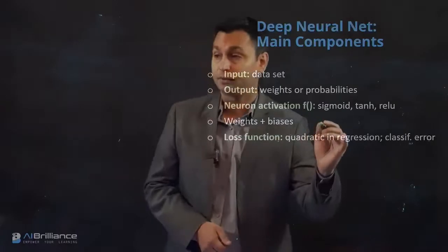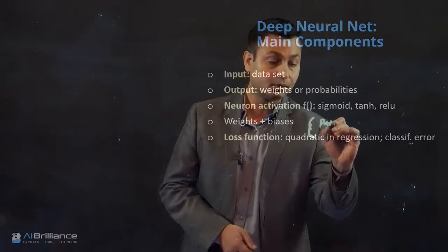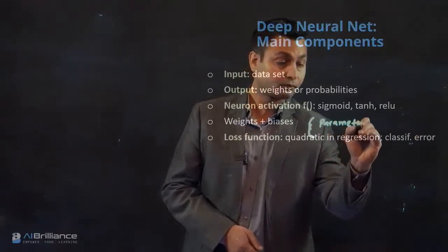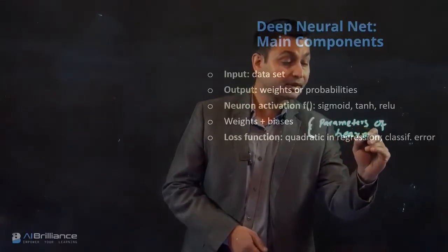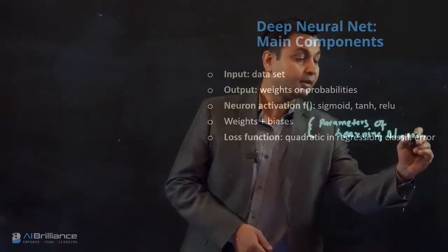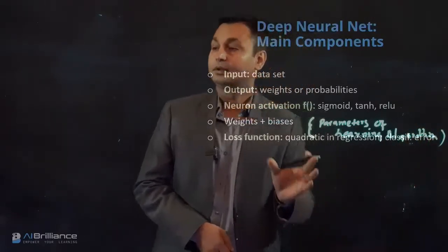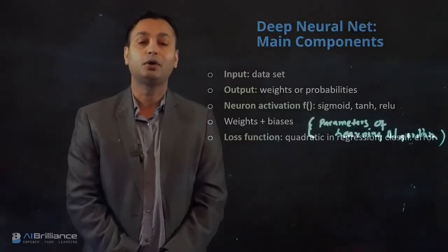We have weights and biases which are essentially the parameters of the learning algorithm. This is something that we try to optimize, and once we have converged on this, the final value of these weights and biases are what we are interested in tuning or learning from the data set.